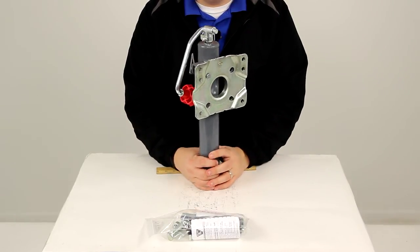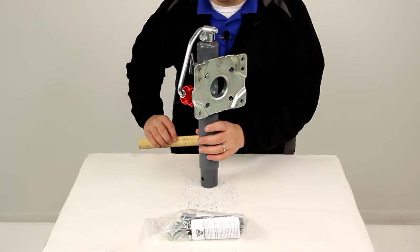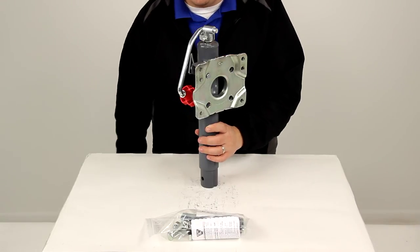That's going to complete today's review of part number BD151443. That's the Bulldog Round Snap Ring Swivel Jack, rated at 2,000 pounds.